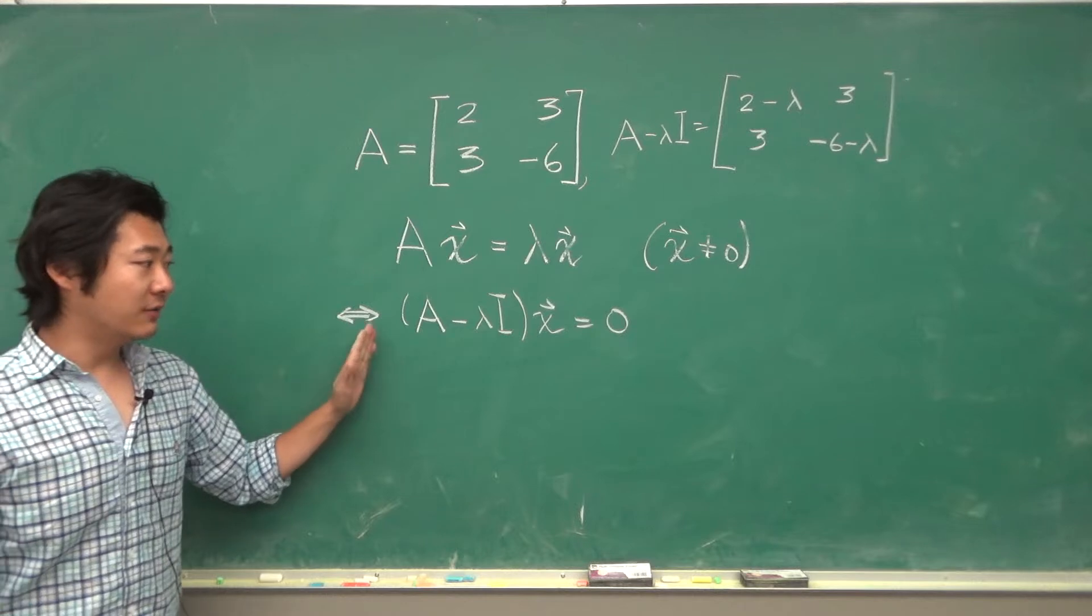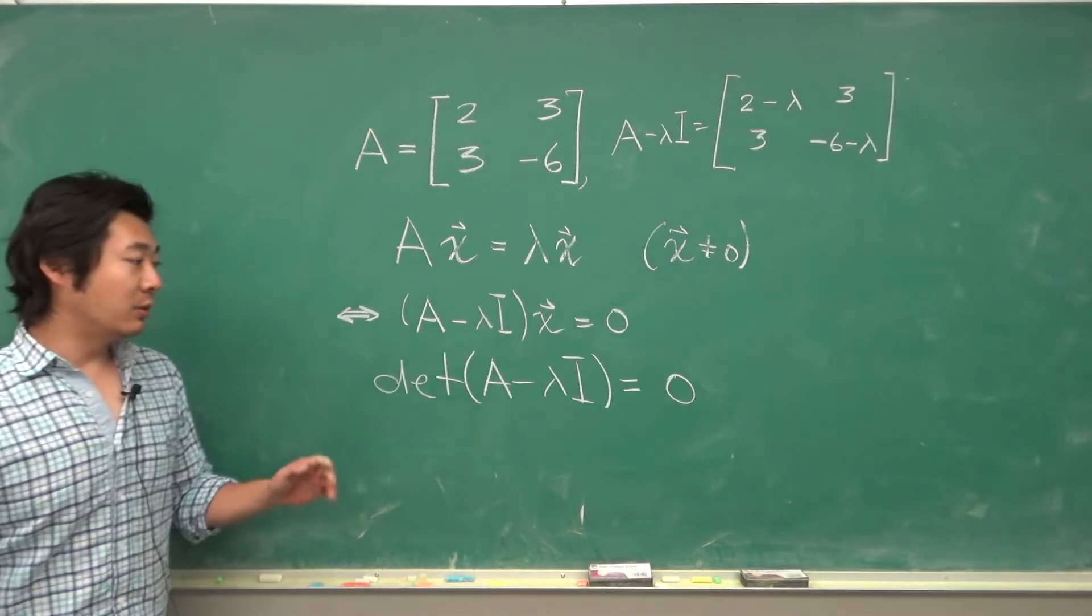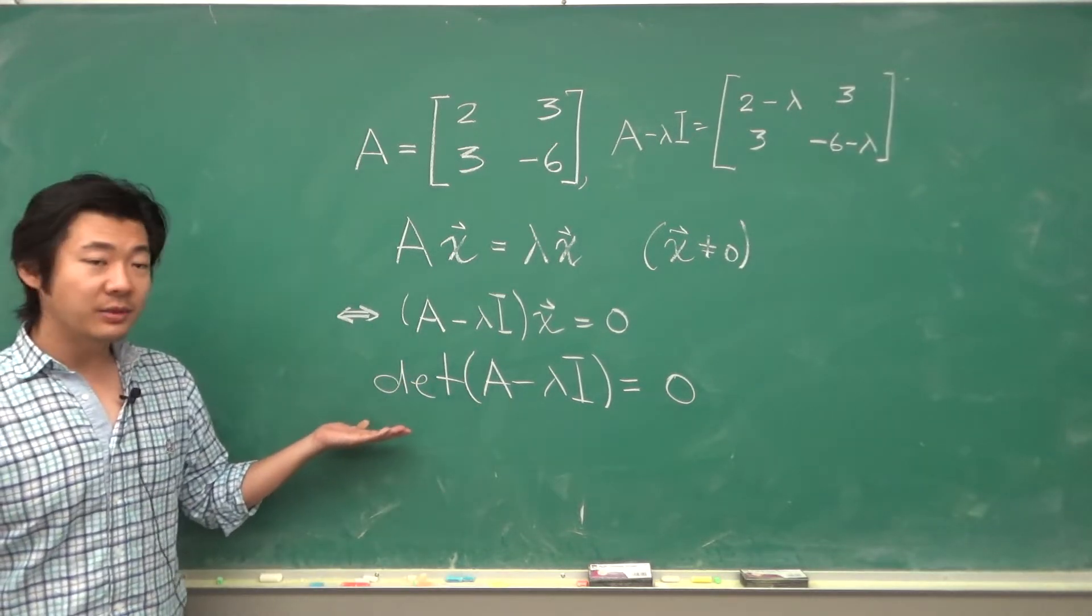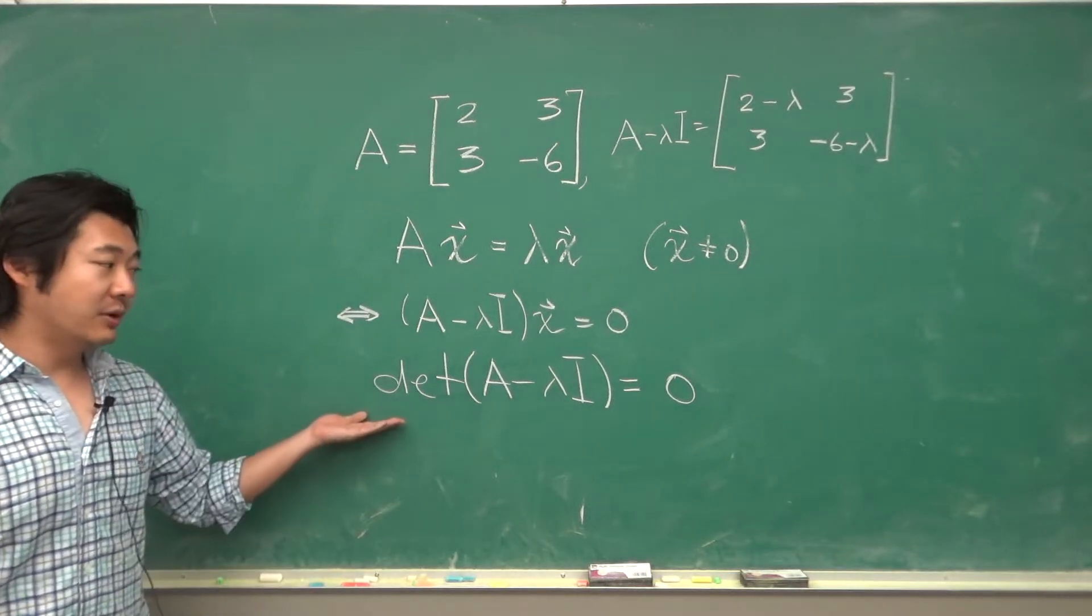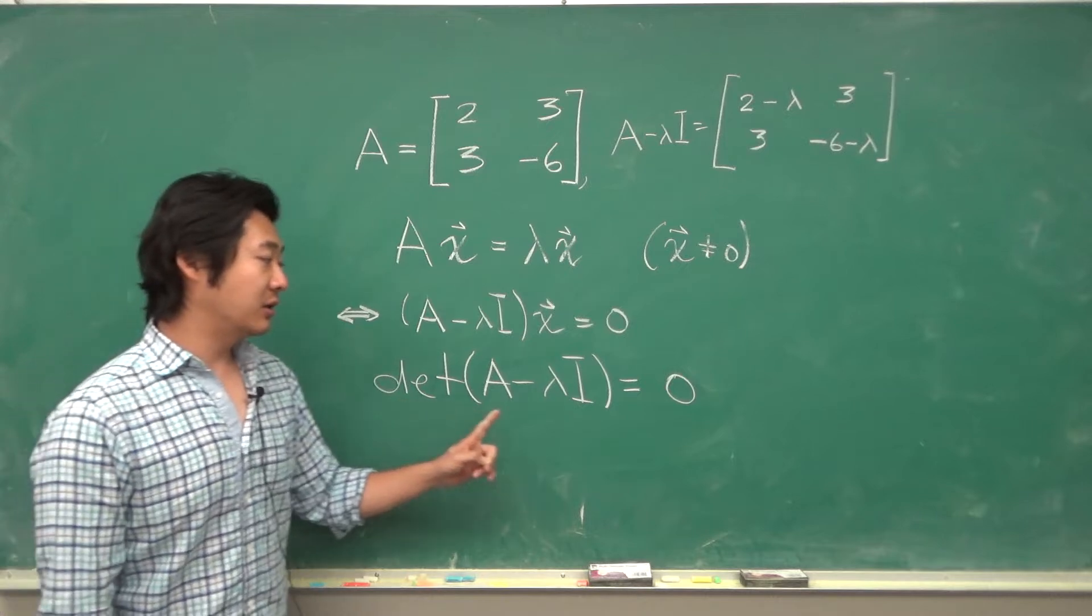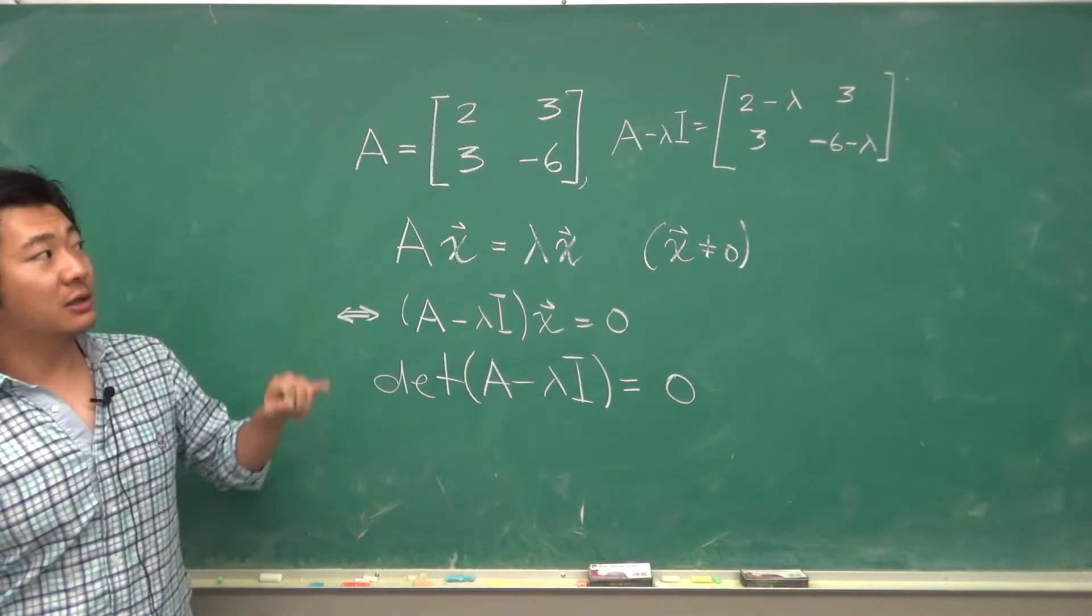Well when the determinant of the matrix is 0 then it's not invertible. So we want to find numbers lambda so that the determinant of A minus lambda I is equal to 0. And this equation is called the characteristic equation. And solutions to the characteristic equation will give us our eigenvalues of this matrix. So let's do it for this example.